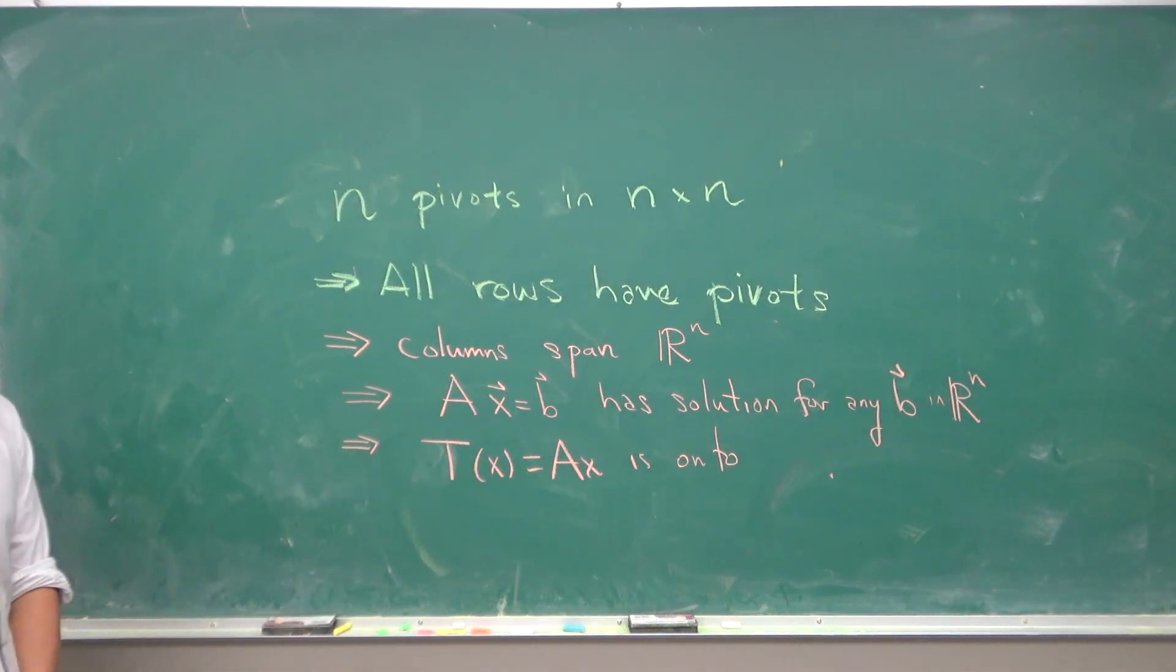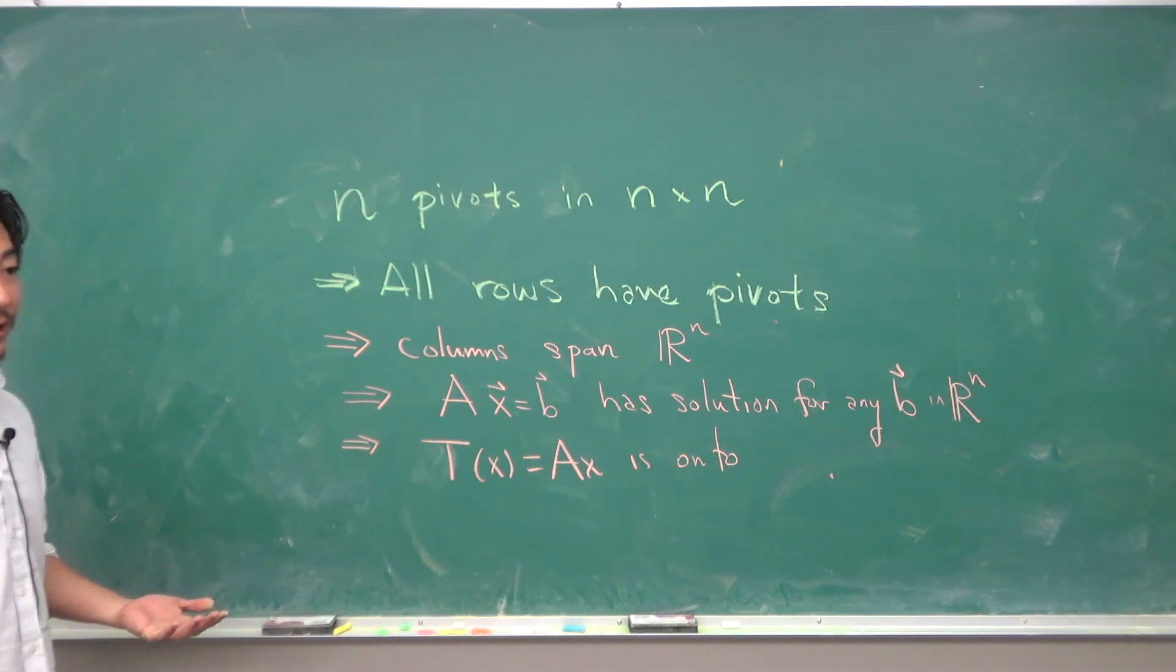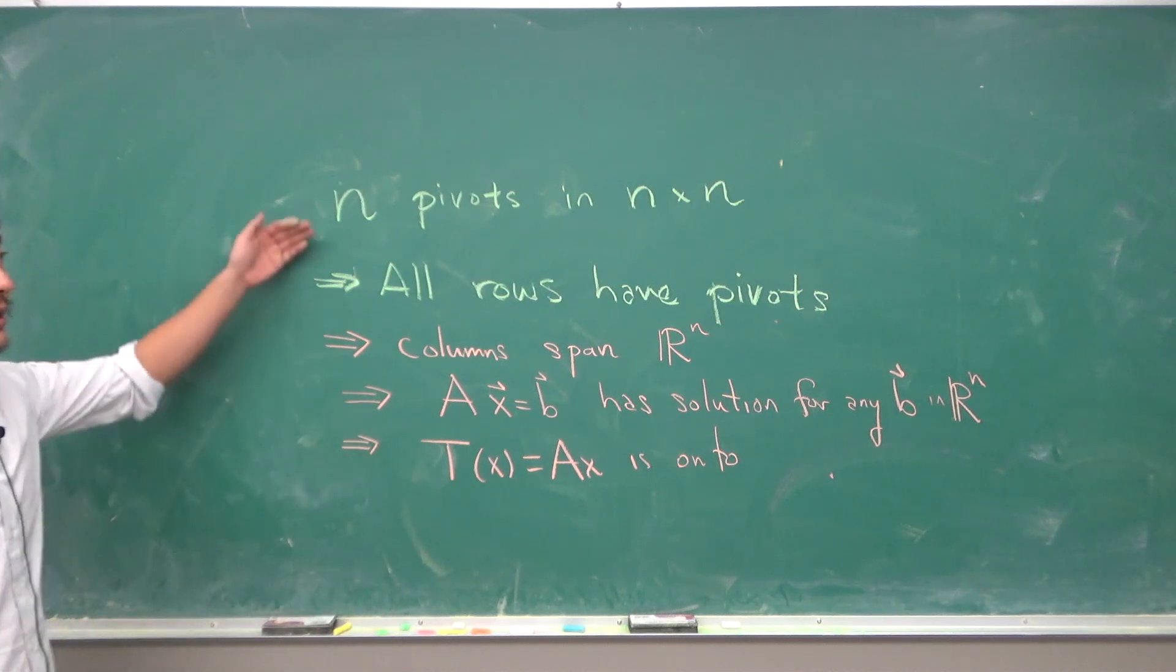So basically the Invertible Matrix Theorem is a review of what we've covered so far and what things we can infer from if a square matrix has n pivot positions.